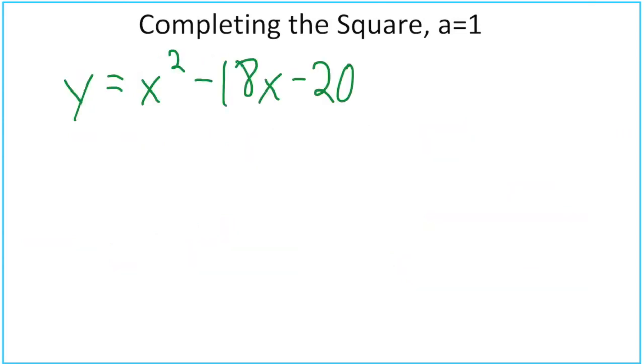Here's our last problem. Go ahead and pause the video, work this out, and then hit play to go ahead and check your answer. Okay, we start with y equals parentheses x squared minus 18x plus, leave a space for a number there, put your negative 20 on the outside.